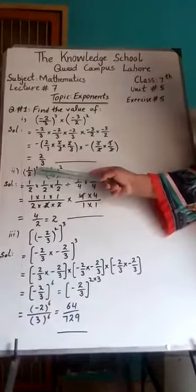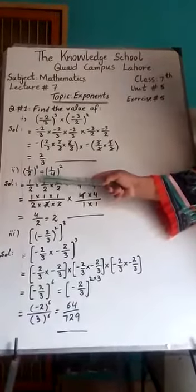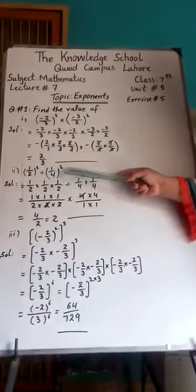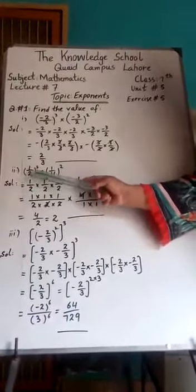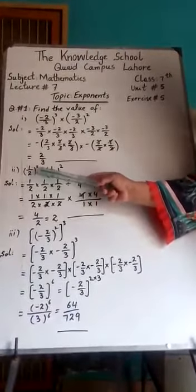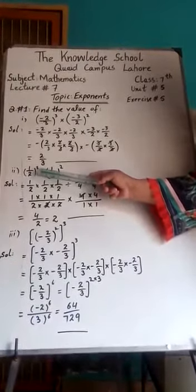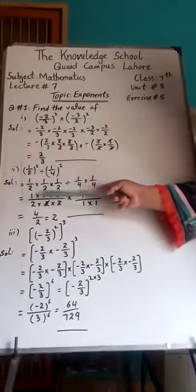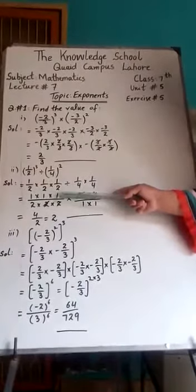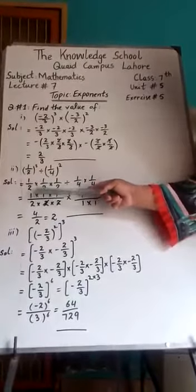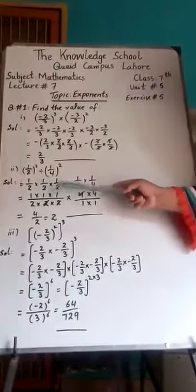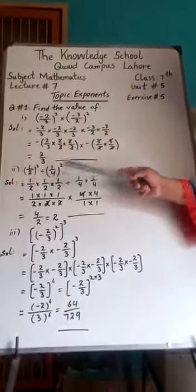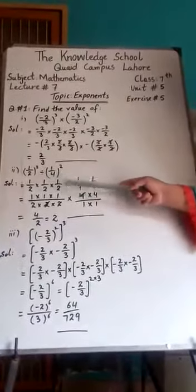Second part: 1 by 2 whole cube, divided by 1 by 4 whole square. Students, the fraction 1 by 2 has exponent 3, so we will write this fraction 3 times: 1 by 2, multiply by 1 by 2, multiply by 1 by 2.